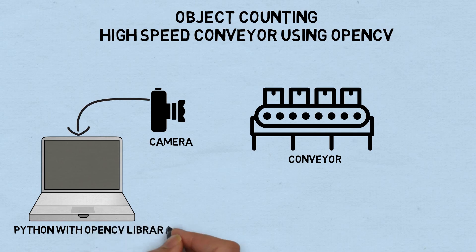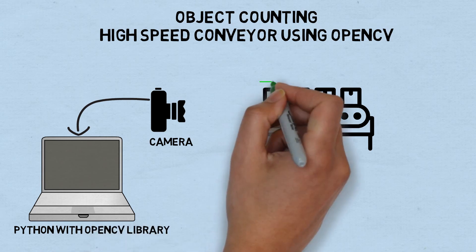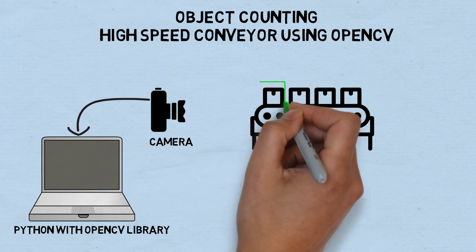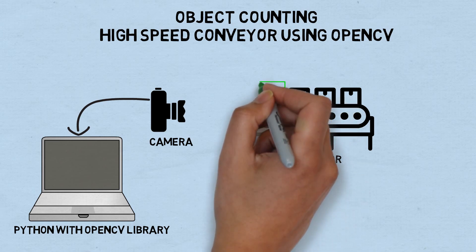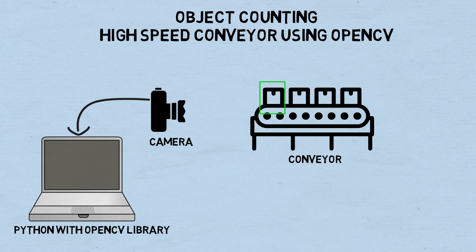In the Python code, we draw a rectangle as the object counting area. Every object passing through the area, Python will detect the object and count it. Then the data will be input into a Microsoft Excel file as output.